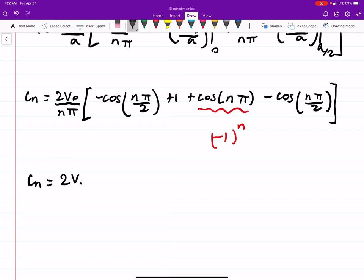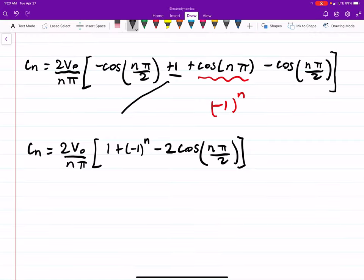So c_n is 2V₀ over nπ. So cosine of nπ over 2, so that's going to be just 1. So whether it's π over 2, whether it's whatever, essentially what you're going to be getting is just 1 there. Oh, I'm sorry. Your 1 is coming from here, plus negative 1 to the n, and then cosine nπ over 2, cosine nπ over 2. So that's minus 2 cosine nπ over 2, combining like terms.